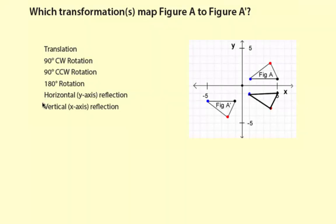So it's going to be a vertical reflection and a translation. Those are the transformations that map figure A to figure A prime.